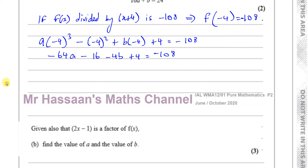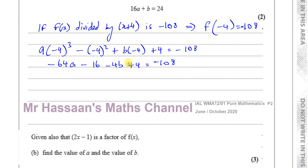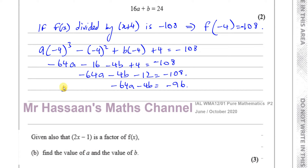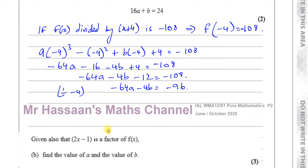We have to show that 16a plus b equals 24. So rearranging: minus 64a minus 4b, and minus 12 equals minus 108. So minus 64a minus 4b equals minus 108 plus 12, which is minus 96. Dividing everything by negative 4: 64 over 4 is 16, giving positive 16a; minus 4 divided by minus 4 is 1, giving plus b; and minus 96 divided by minus 4 is 24.